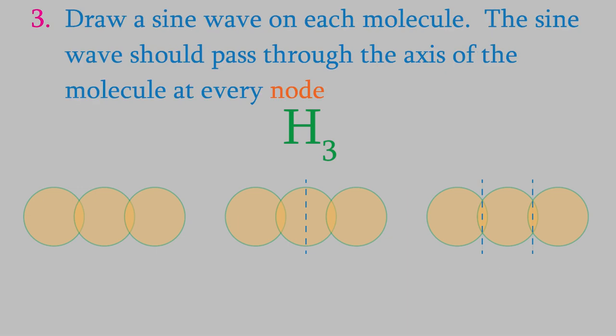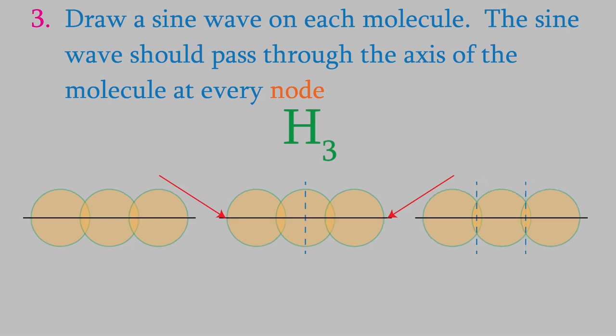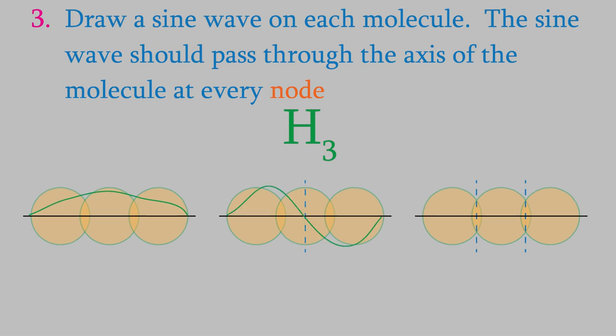In the third step, we draw a sine wave over each molecule. The sine wave starts at the left end of the first atomic orbital and ends at the right end of the last atomic orbital. If we draw an x-axis through the center of the molecule, the sine wave passes through this axis whenever we draw a node line. So, for example, the first molecule has no nodes, so the sine wave starts at the left end, rises, and then meets the axis again at the right end. In the second molecule, there's one node, so the sine wave rises, passes through the axis at the node, and then returns to the axis at the end. Finally, the sine wave on the third molecule looks like this.